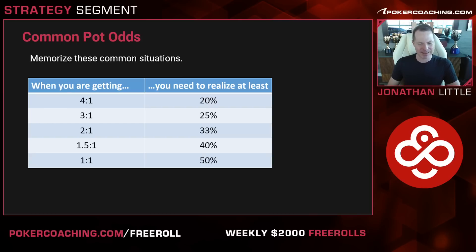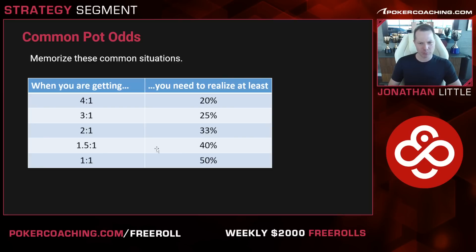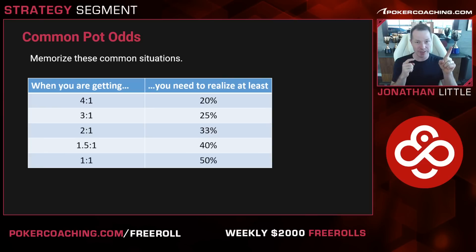Here are common pot odds you definitely want to be aware of. If you're getting 4 to 1, you need to realize at least 20% of the pot. Getting 3 to 1, you need 25%. Getting 2 to 1 — when your opponent pots it — you need 33%. If your opponent bets more than the pot, like 1.5 to 1, you need to realize 40%. And at even money (1 to 1), you need to win 50% of the time.